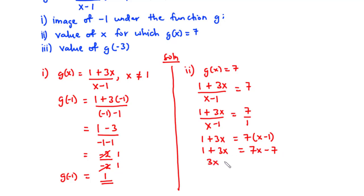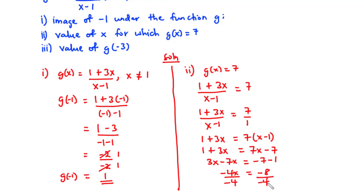So we have 3x minus 7x equals negative 7 minus 1. Now 3x minus 7x is negative 4x, equals negative 8. We divide through by negative 4, and then we have x equals 2. So the value of x when g(x) is 7 is equal to 2.